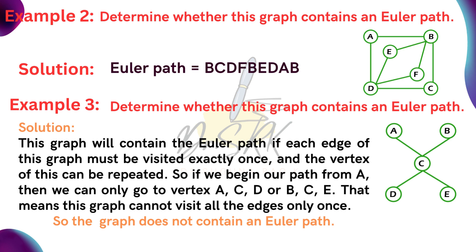Now coming to example number 3: determine whether this graph contains an Euler path. Look at the figure below. This graph will contain an Euler path if each edge of this graph must be visited exactly once, and the vertices of this graph can be repeated.